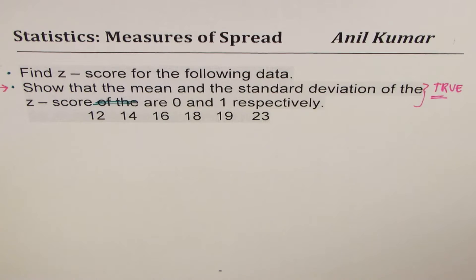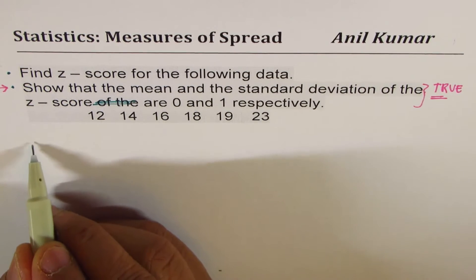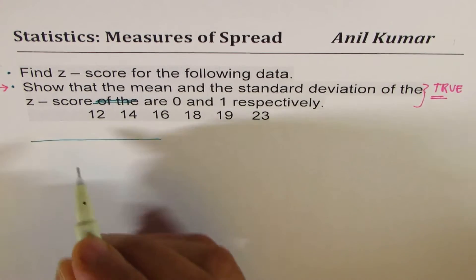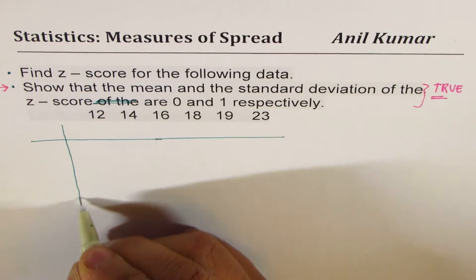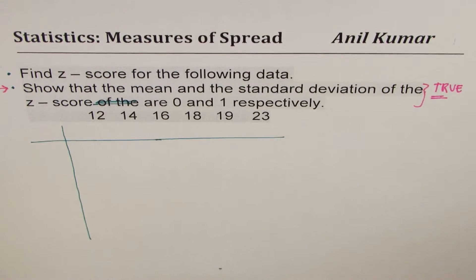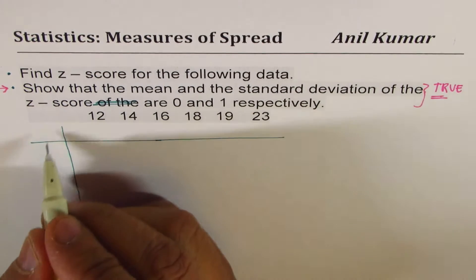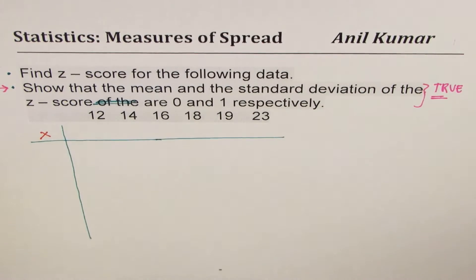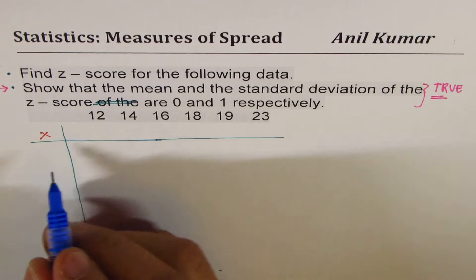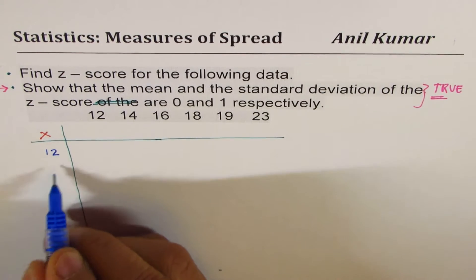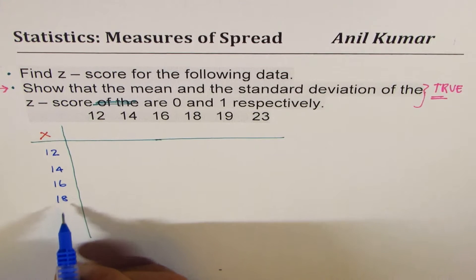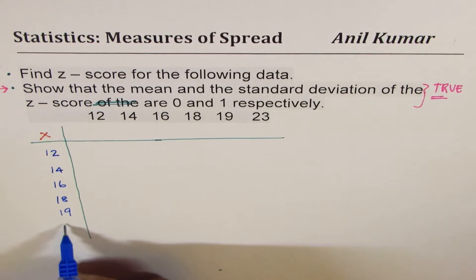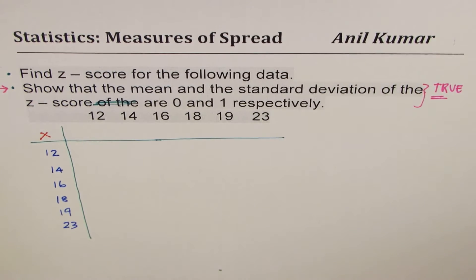So first part, let's find z-score first. I'll write the given values in the form of a table. In the first column, we will write the values: 12, 14, 16, 18, 19, and 23. So these are the values.